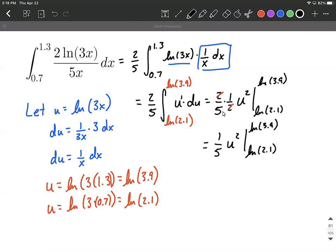All right, what's left is we need to substitute these bounds in. So as we substitute in, it's going to be natural log of 3.9, but it's squared minus the natural log of 2.1, but it's squared as well inside a big set of parentheses. And that's a nice exact answer.